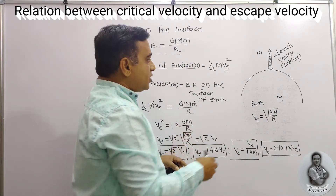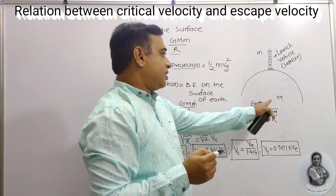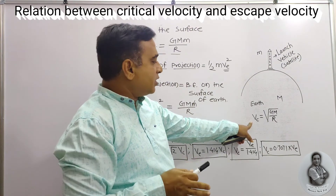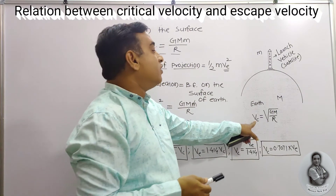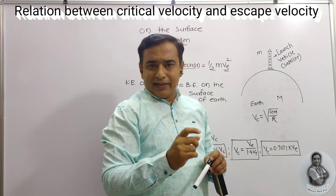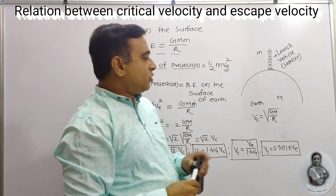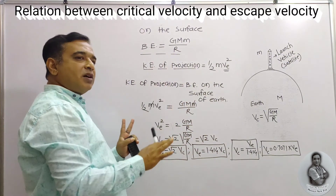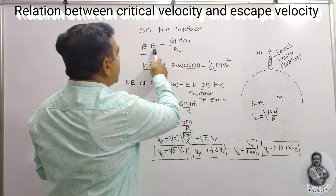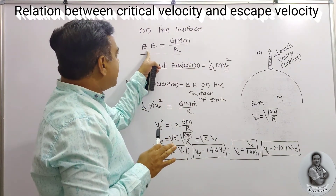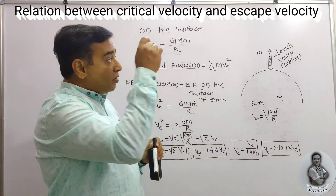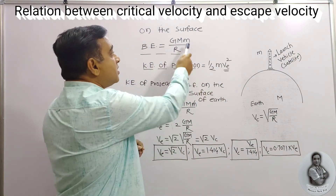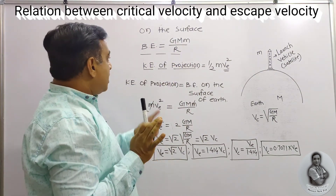Now in Hindi: Here R is the radius of the earth, capital M is the mass of the earth. The critical velocity formula is vc = √(GM/(R+h)). The binding energy on the surface equals GMm/R, where capital M is the mass of the earth and small m is the mass of the satellite.